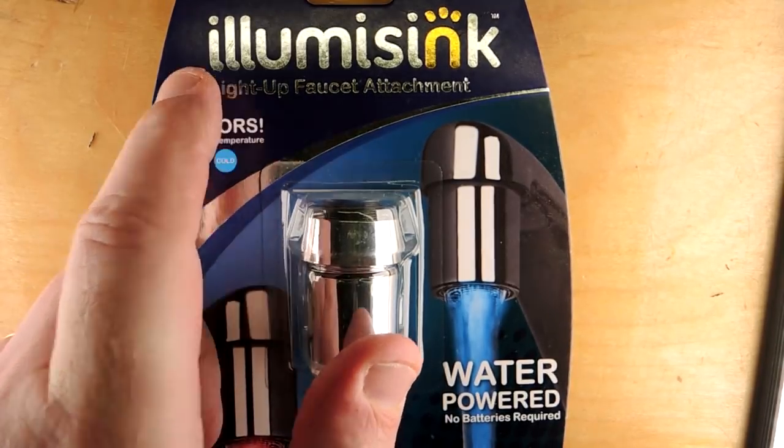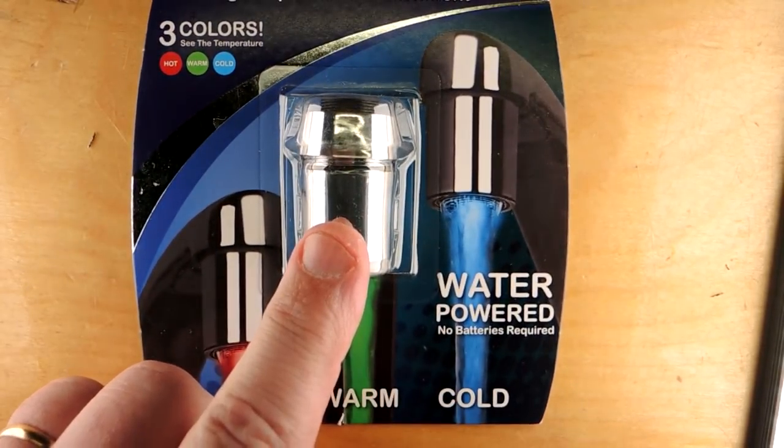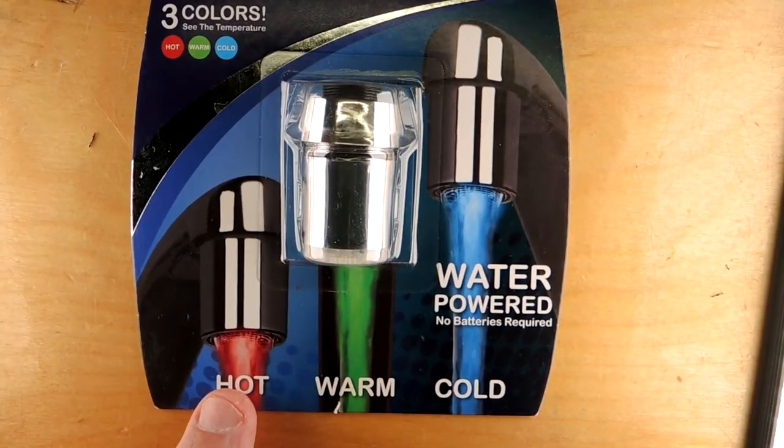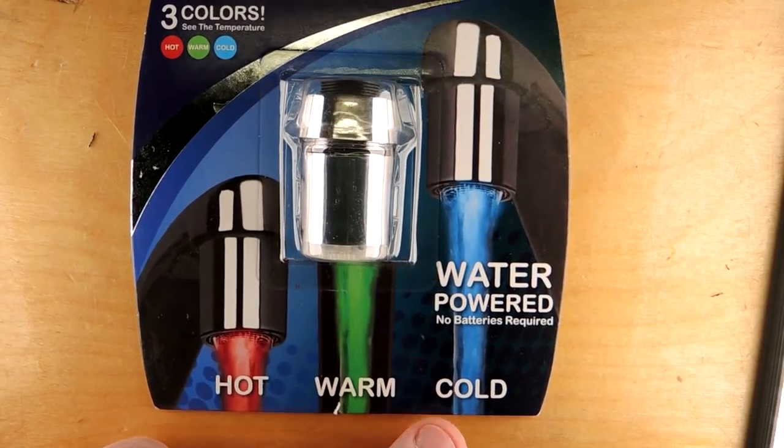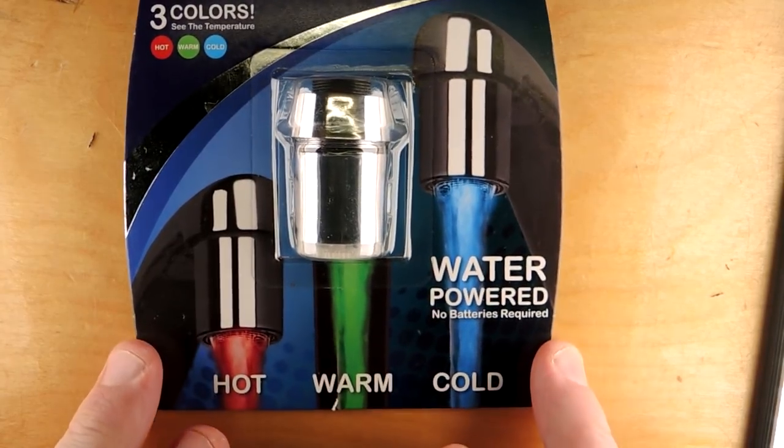Teardown time. This is the IllumiSync, and apparently you put it onto a faucet and it'll glow red if it's hot water or blue if it's cold water, green if it's in between.